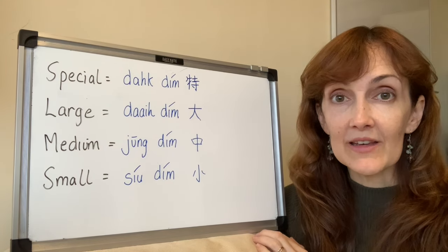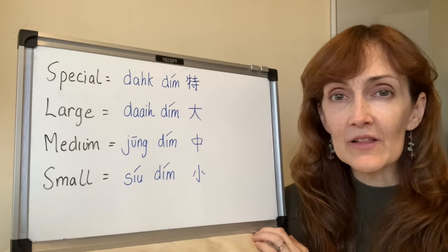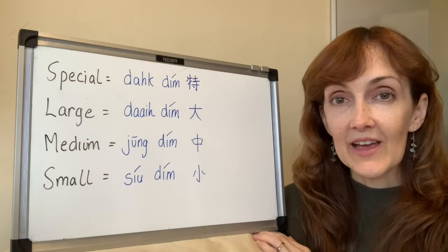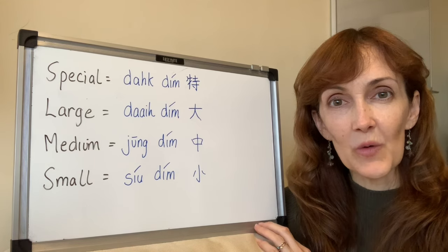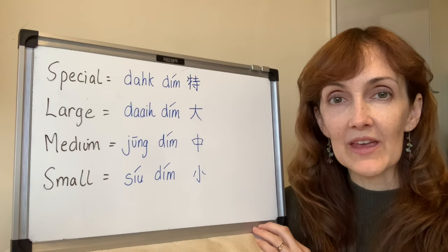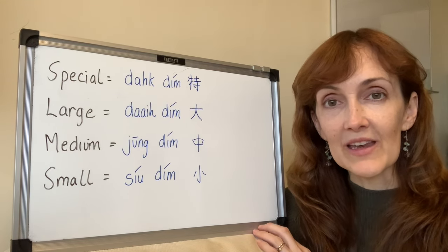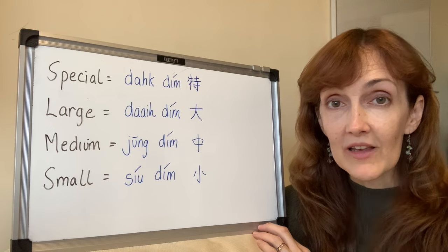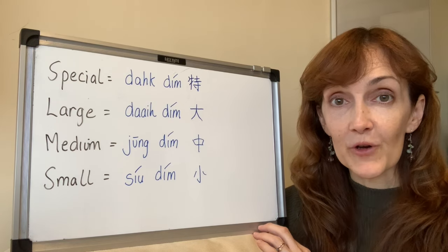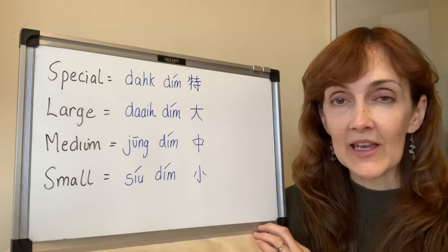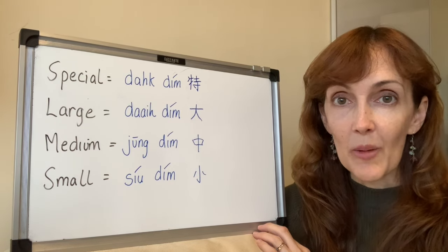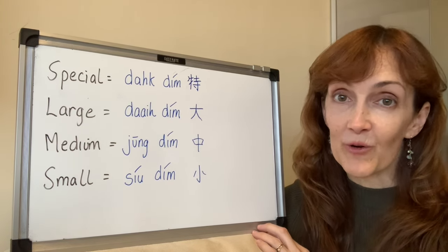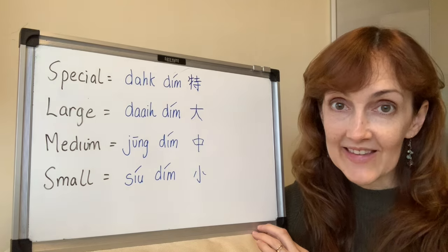In terms of English speakers, it almost throws you off, because you're thinking: if it's large, medium, and small, normally that refers to size and not price. But in dim sum, it refers to price.